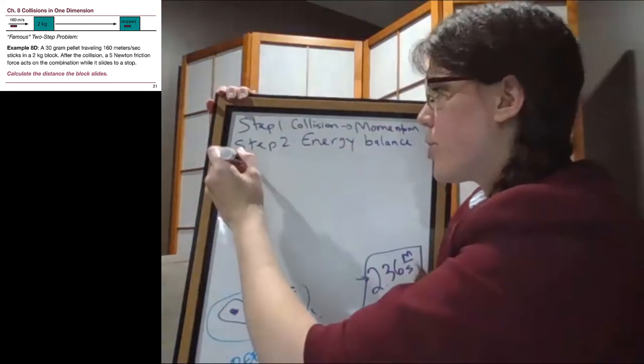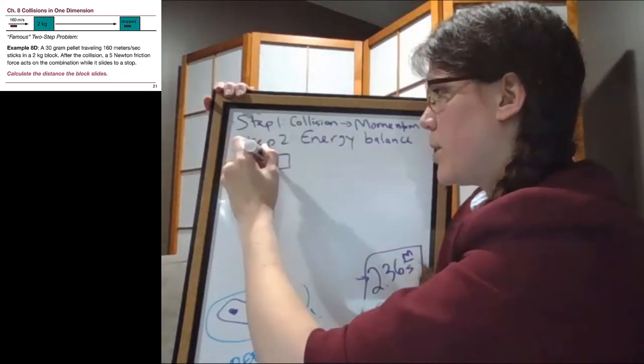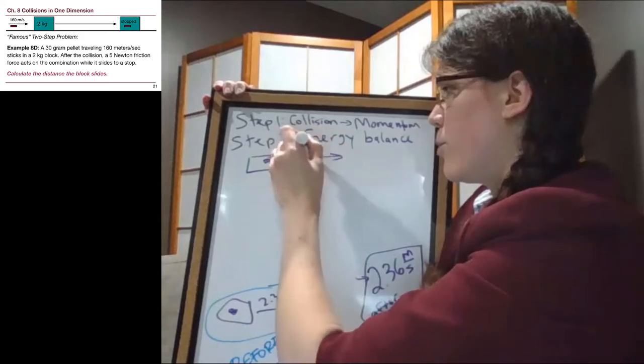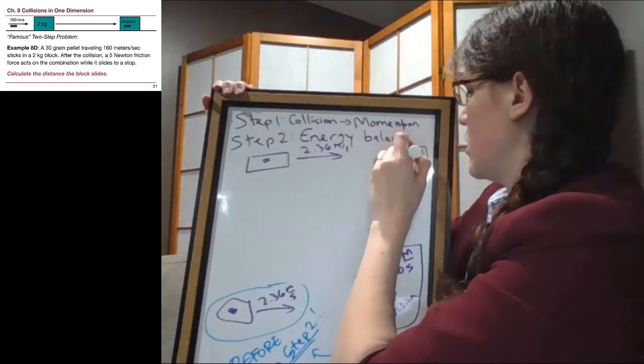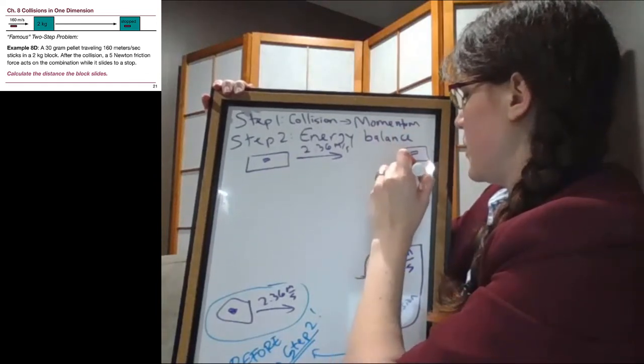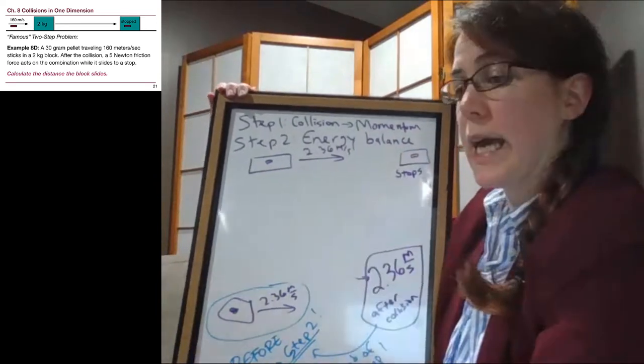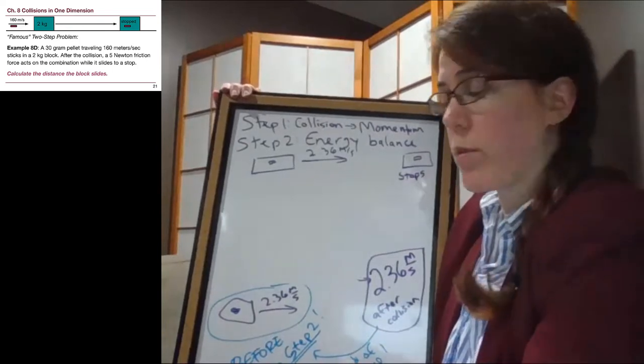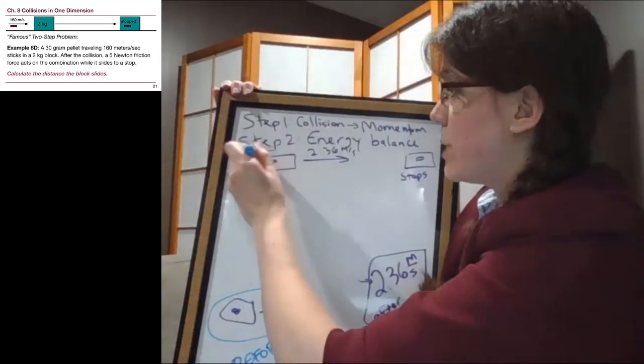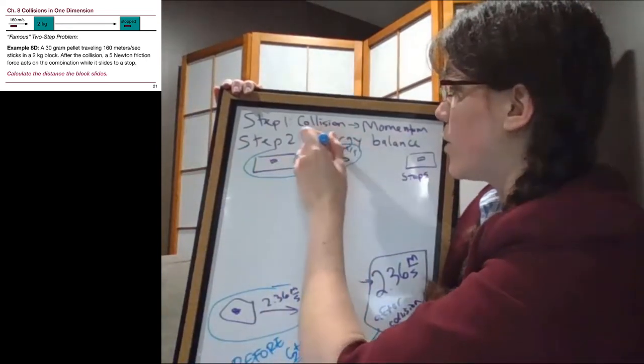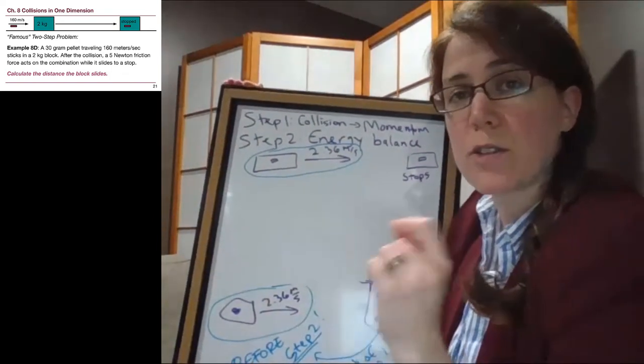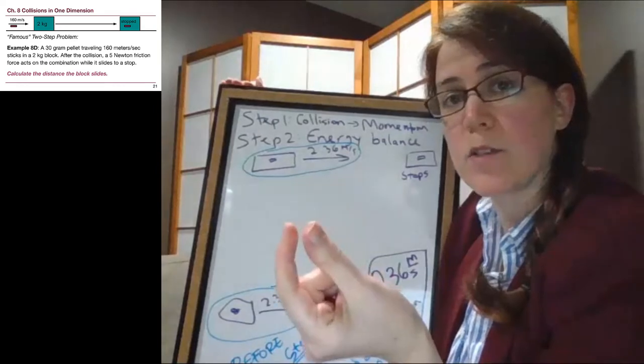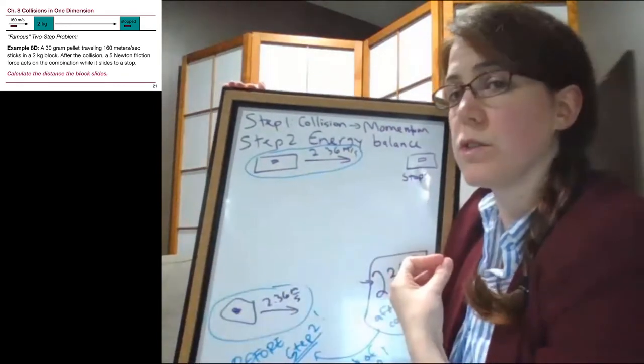I started it drawing it on the bottom but we'll draw it again up here. We have it moving at 2.36 meters per second at the start, at the end it's stopped. And every single energy problem that we do has the same mass at the beginning and the end, which is another way for us to identify it's a two-step problem.